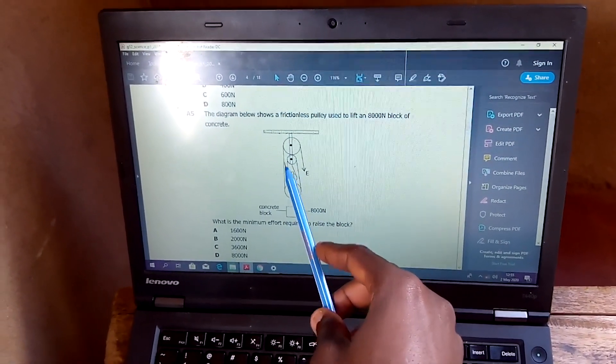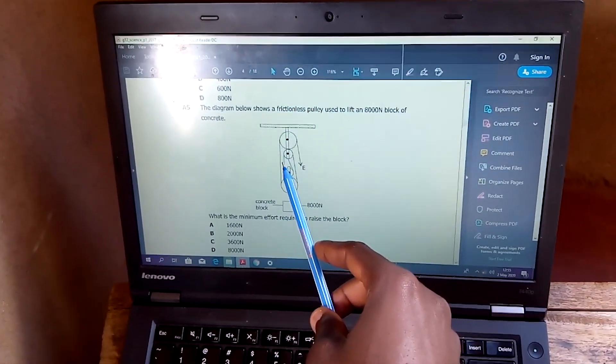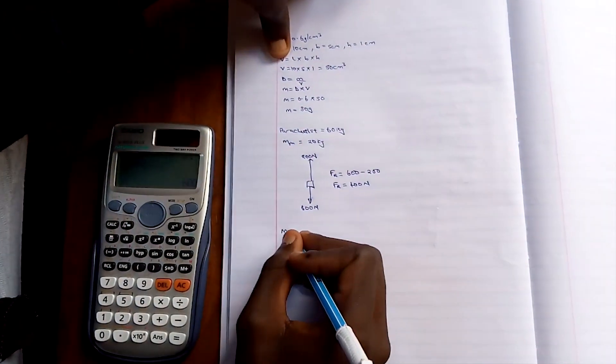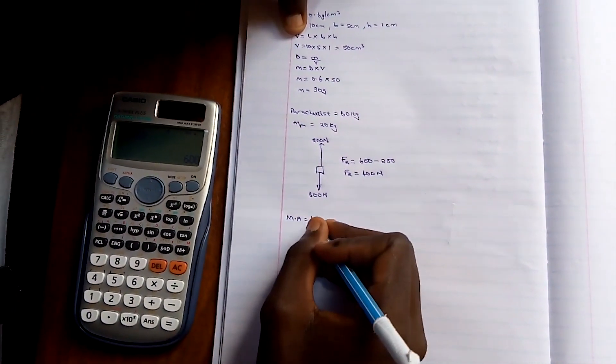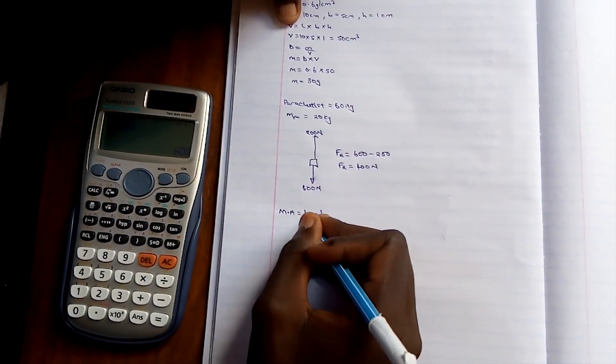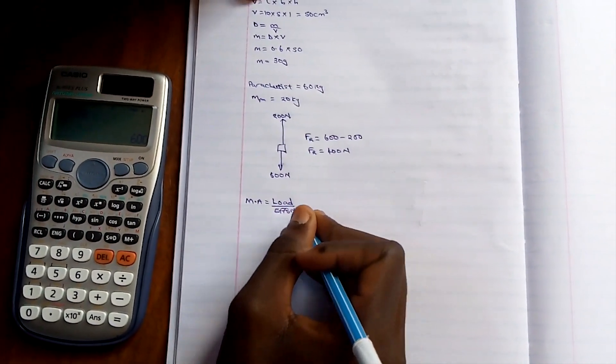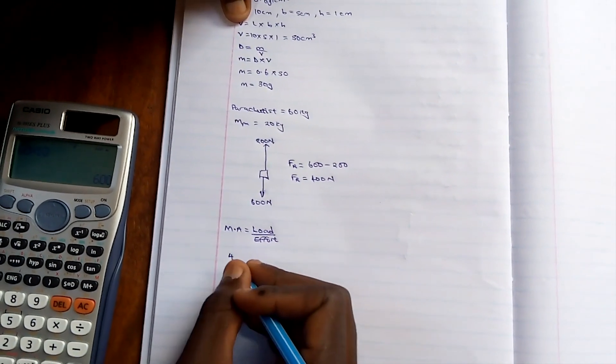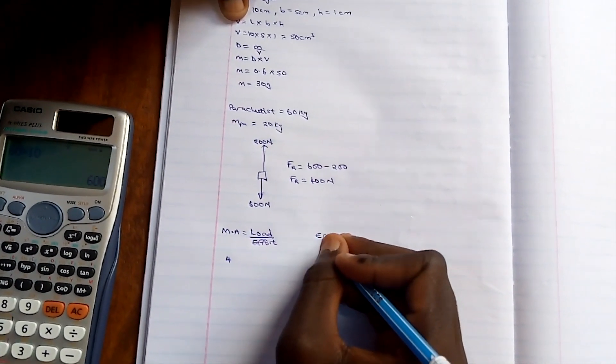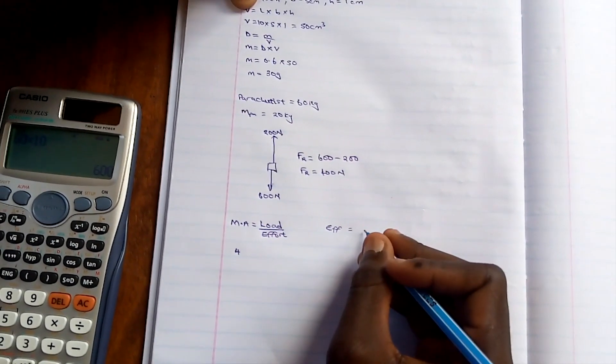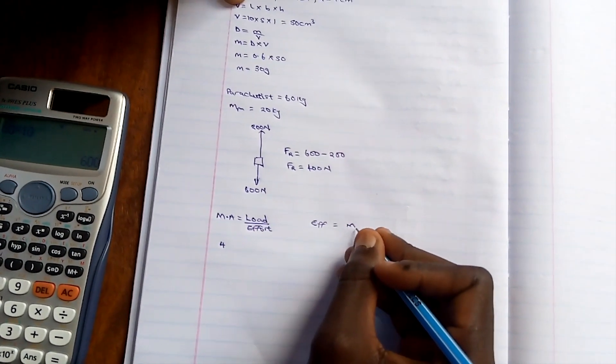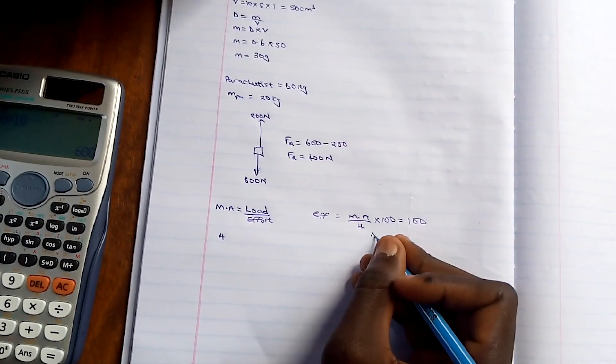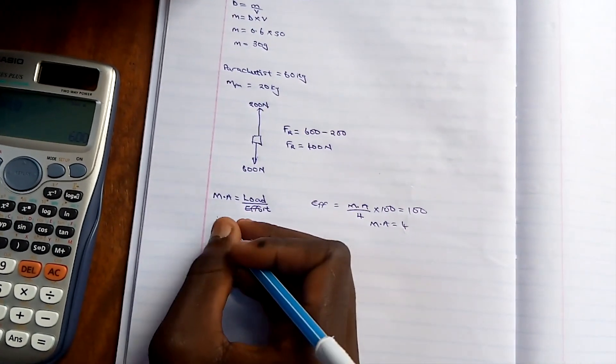So if the velocity ratio is 4, then even the mechanical advantage is 4. But if the mechanical advantage is 4, let's solve it. MA is equal to load over effort. But we want to find the effort. So the mechanical advantage is 4, because the efficiency is 100%. Efficiency is 100%, meaning MA over the velocity ratio, which is 4 times 100, should be equal to 100%. Then the MA will be equal to 4.